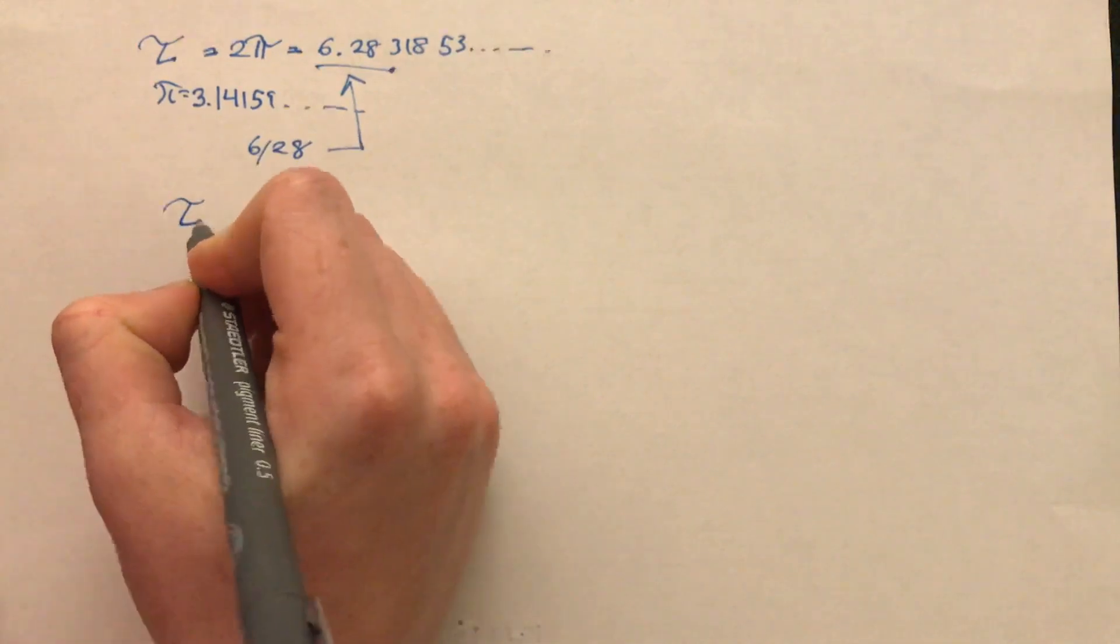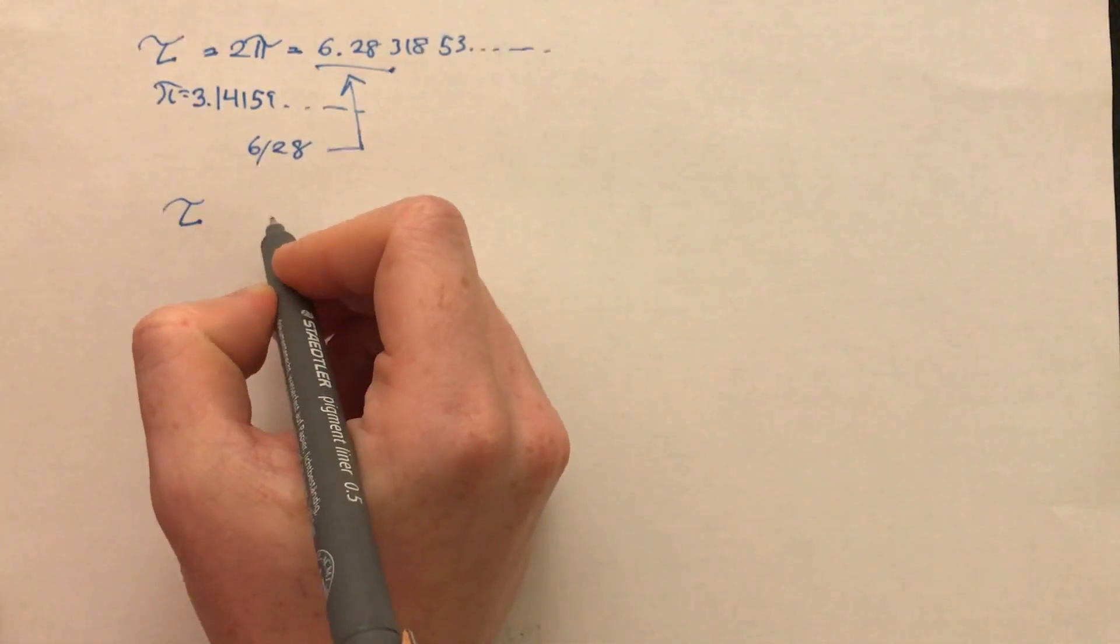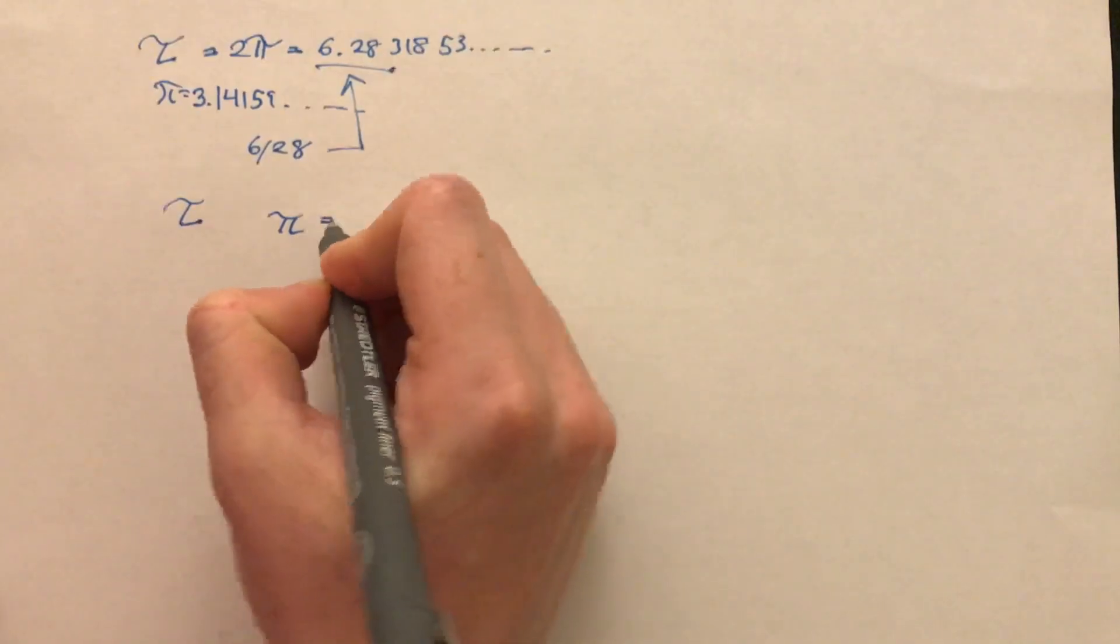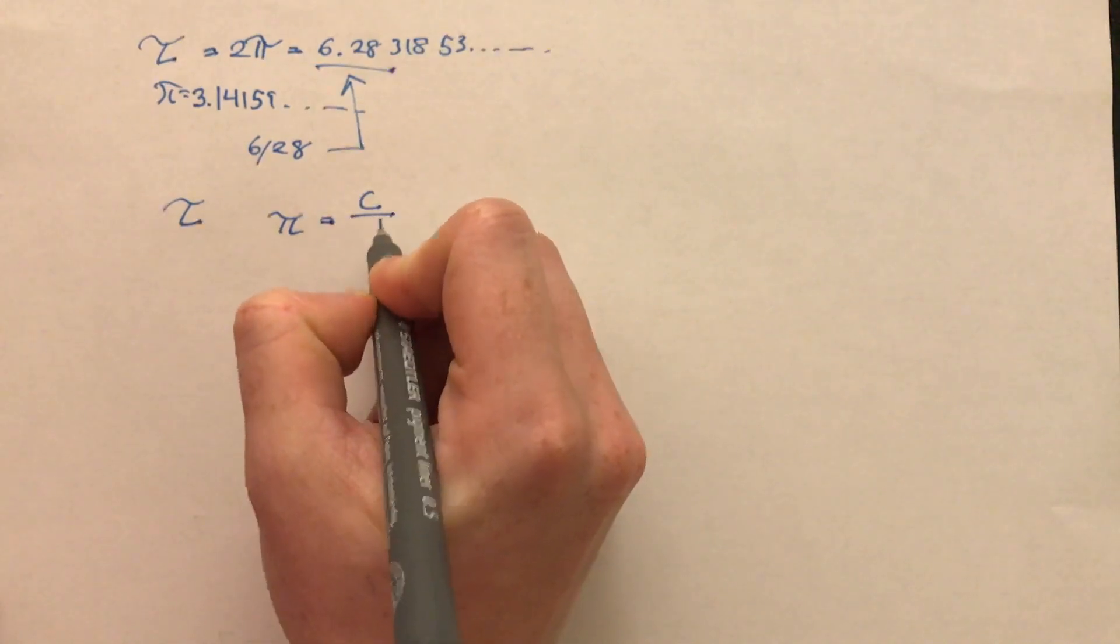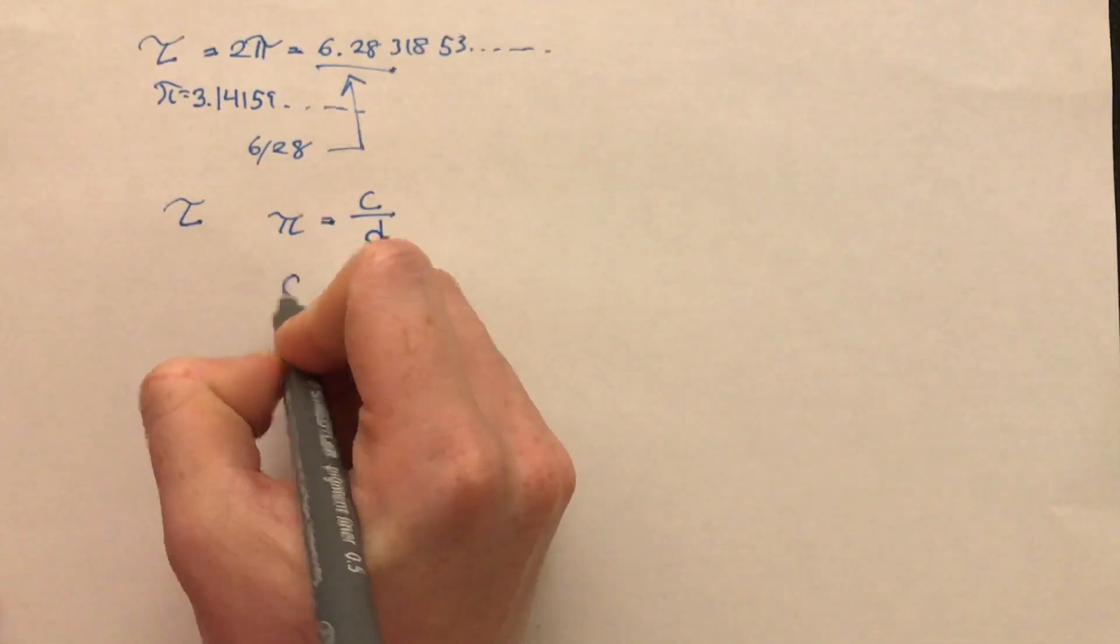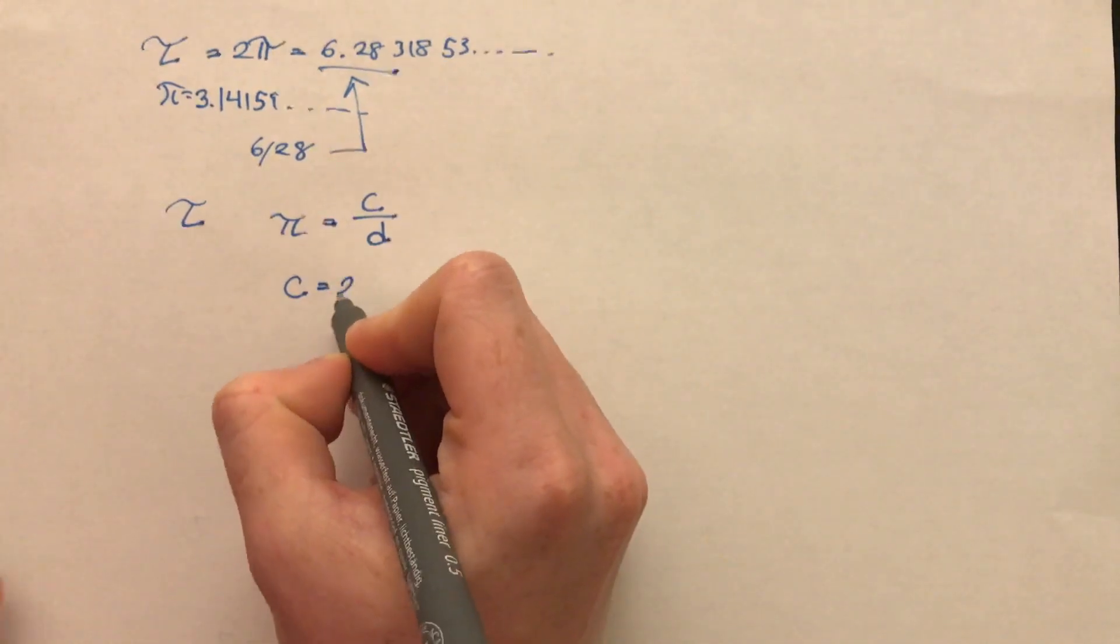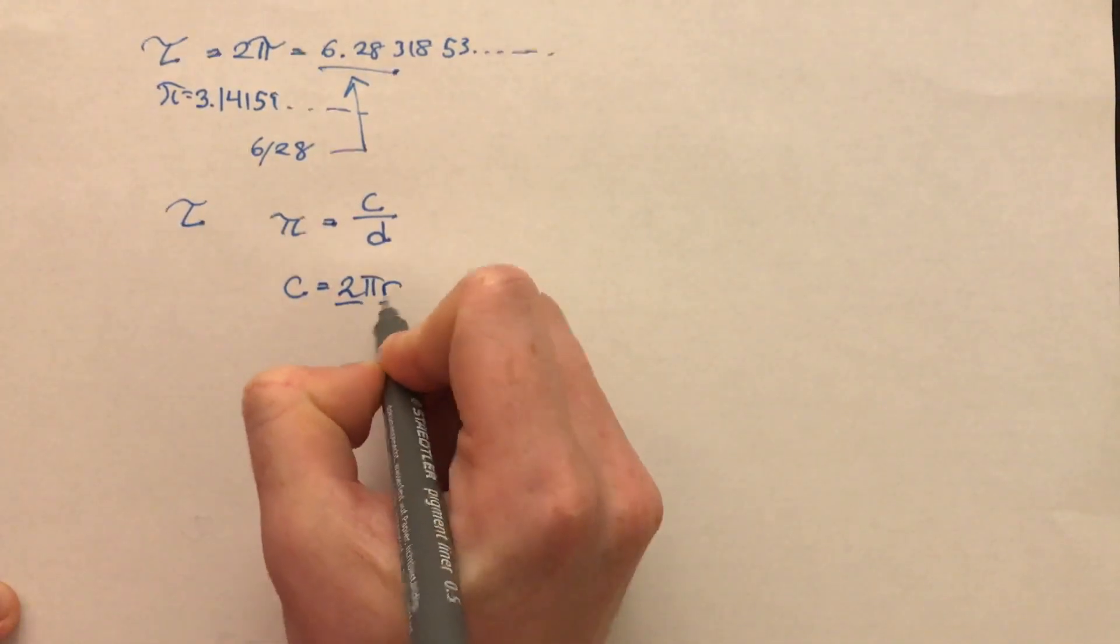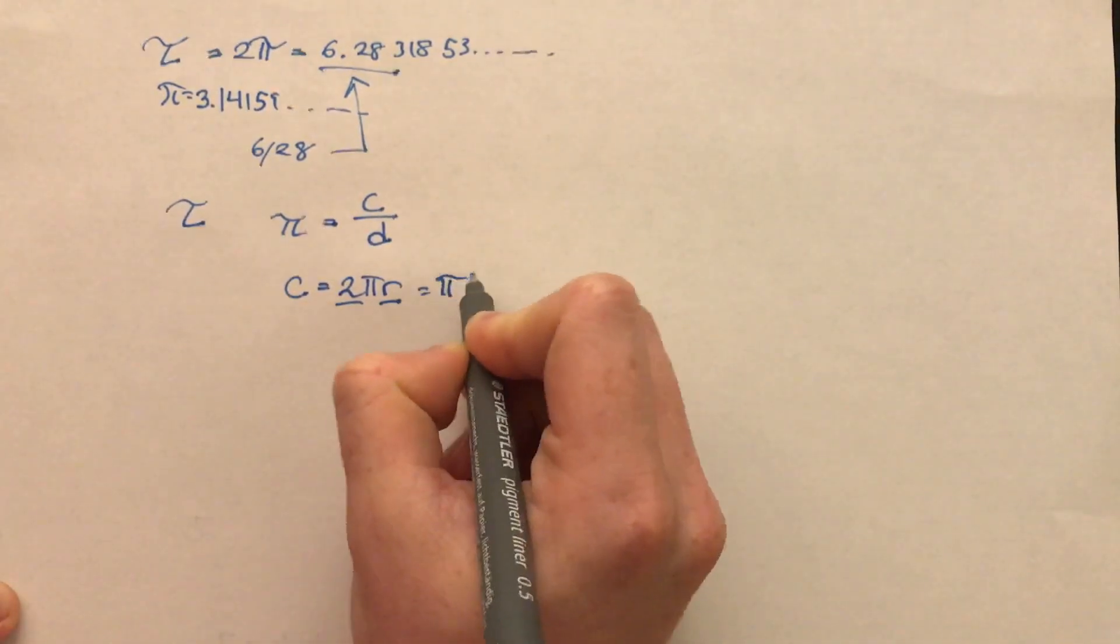But what exactly is tau? So we know that pi is equal to the circumference of a circle divided by its diameter, because we know that circumference is equal to 2 pi r, and these r's just become pi diameter.